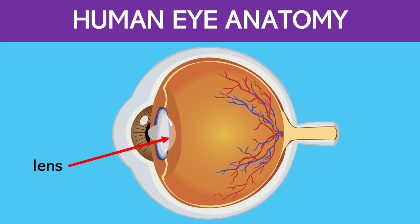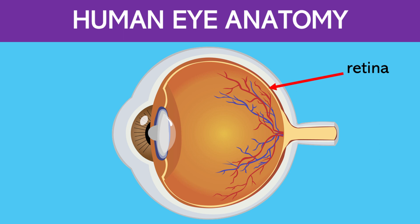Next is the lens. This is a transparent, flexible structure behind the iris and pupil. It changes shape to focus light onto the retina, allowing us to see objects clearly at different distances, a process called accommodation.